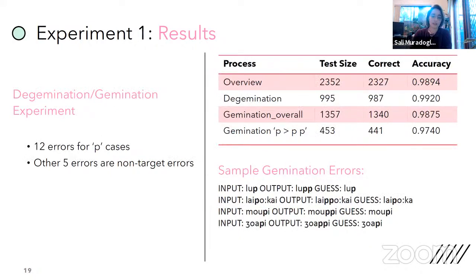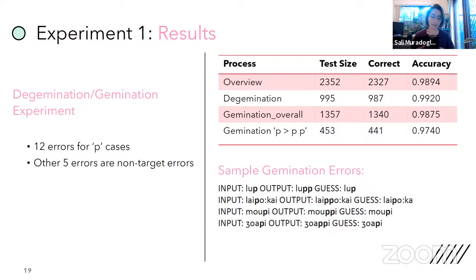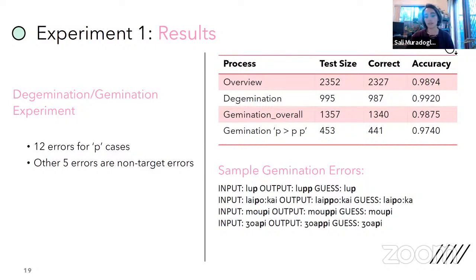For the gemination-degemination experiments, we again see a good case of extending P as a consonant. Given that the vowel set was only five, extending to the 19-consonant category requires more training instances, but we still see an overwhelming tendency to extend. When we do get errors, in most cases it's just ignoring P and not geminating when it should.